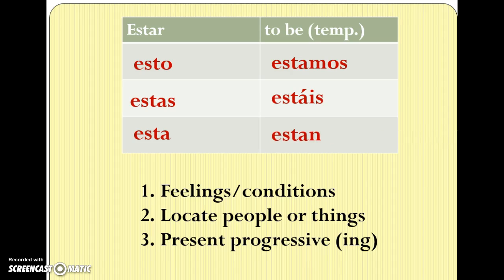Now, this is not a normal AR verb — that's why we didn't study it with our AR verbs. It has a few small changes. You need to put an accent over the A in estás, está, and están. We've already used cómo estás and cómo está, so that shouldn't be too difficult. The yo form also needs to end in a Y, not an O as normal. So it's estoy, estás, está, estamos, estaís, and están.